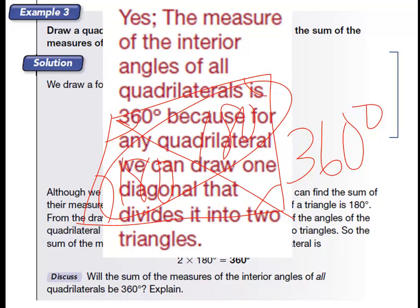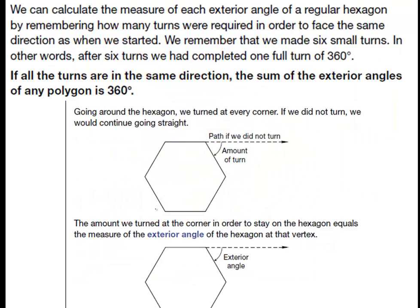Yes, they will. Well, the measure of the interior angles of all quadrilaterals are going to equal 360 because you can only get one diagonal out of them. You're going to always be divided into two, so it's always going to equal 360. Okay, so now let's look at our exterior angles. We can calculate the measure of each exterior angle of a regular hexagon by remembering how many turns it requires to rotate 360 degrees, or just the amount of 1, 2, 3, 4, 5, 6, or just the number of sides would be 6. Same thing. But we know that the whole thing equals 360 degrees.